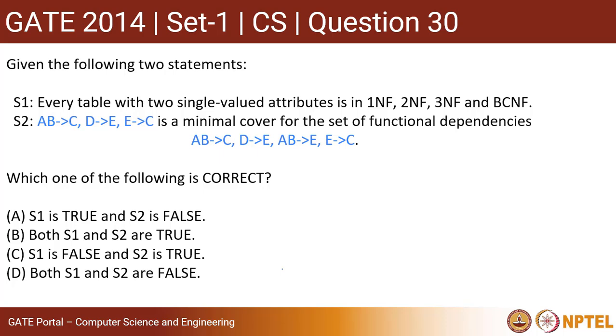Given the following two statements, statement one: every table with two single valued attributes is in 1NF, 2NF, 3NF and BCNF.